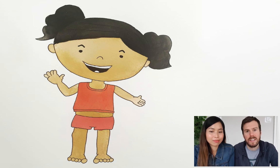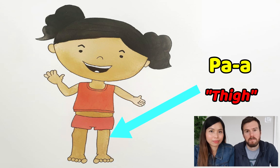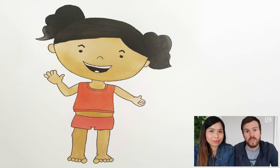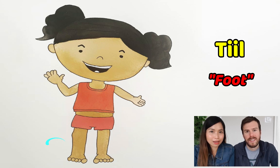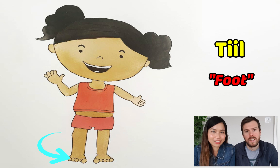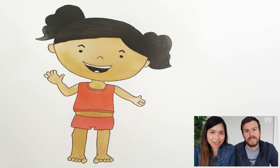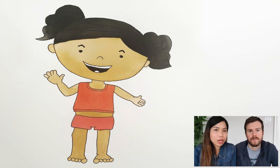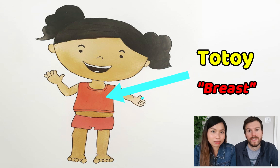We can break that down slightly and go to thigh — paa. The word for thigh is paa. And then we have the word for foot, which is tiil. The word for foot is tiil. For educational purposes, we're going to teach you the female private parts as well. So the first one is the word for breasts, which is tutoy. The breasts is tutoy.